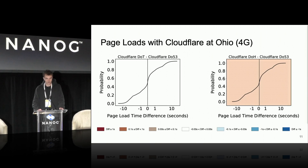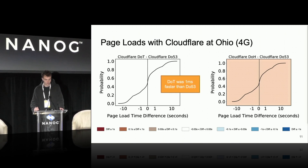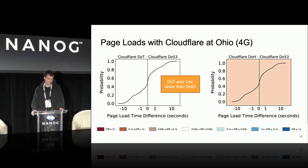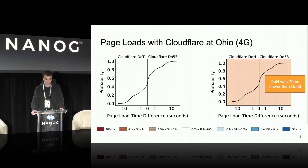Moving to emulated 4G network conditions, performance changes a little. DOT is still performing just slightly slower than DO53 in median page load time. But with DOH, it has gotten significantly slower — DOH is 70 milliseconds slower in median page load time than DO53 under these emulated 4G conditions.